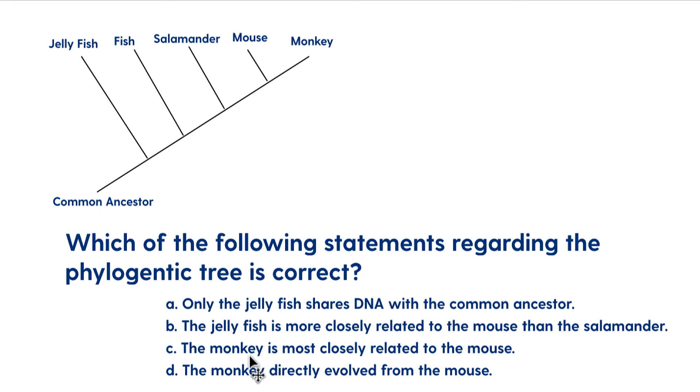C says the monkey is most closely related to the mouse. That would make sense if we're only comparing the organisms here in the cladogram. The monkey is most closely related to the mouse, then the salamander, then the fish, then the jellyfish. All right, so C sounds correct. Let's look at D.